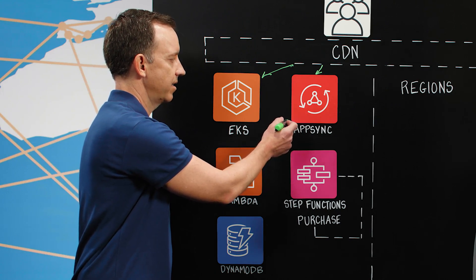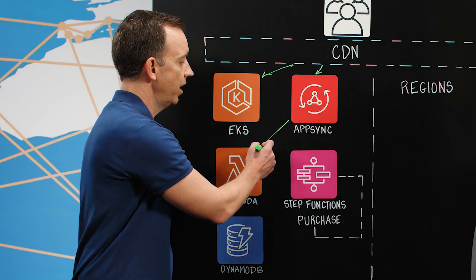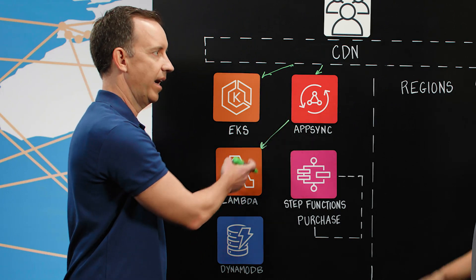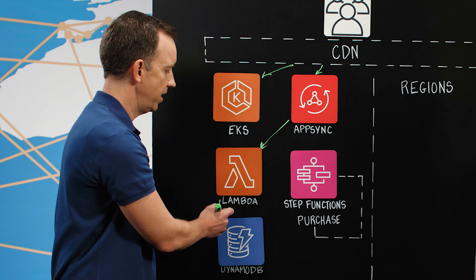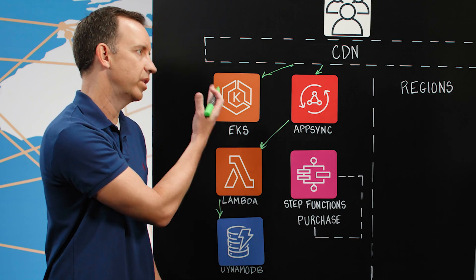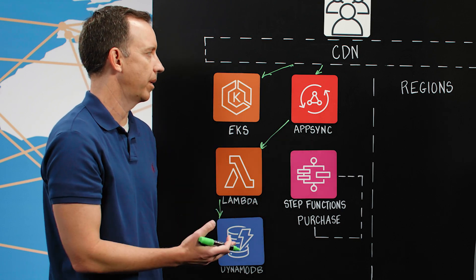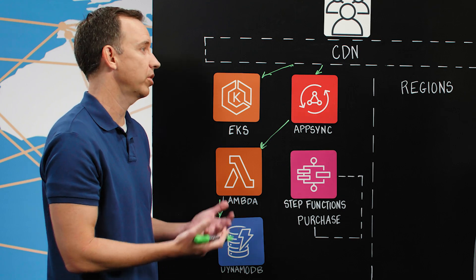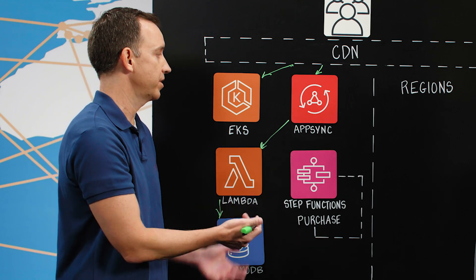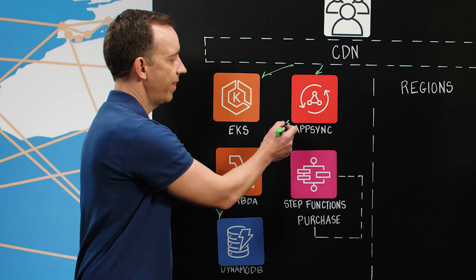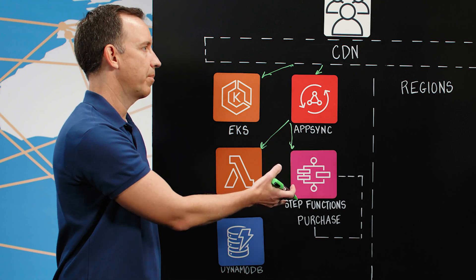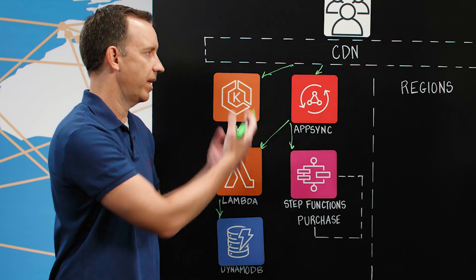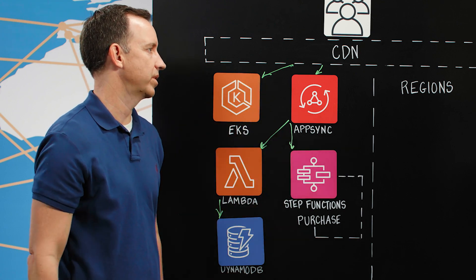For stuff that maybe is a quick load — query, retrieve data — it might hit AppSync and then go down to DynamoDB to load the data and retrieve it, return it back. For something that takes longer, like the purchase mutation, that might go down to hit the Step Function, execute that purchase, and then return the result.